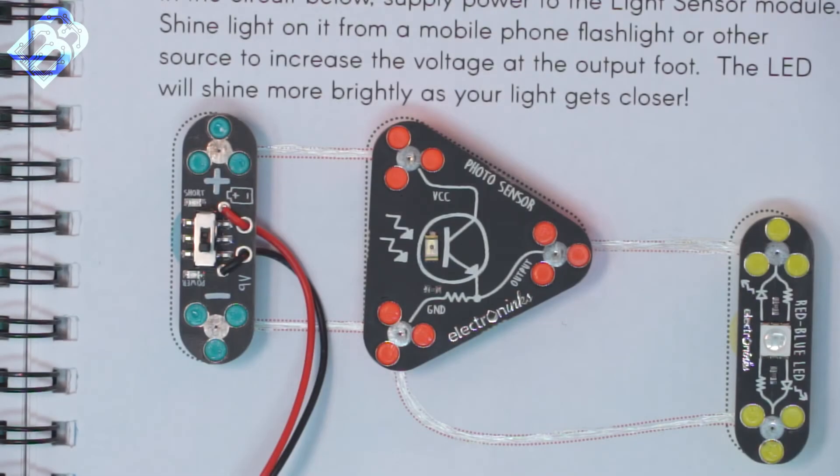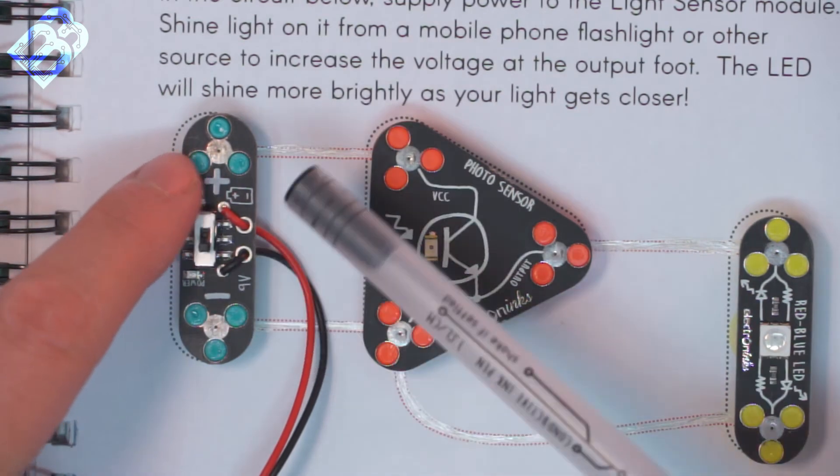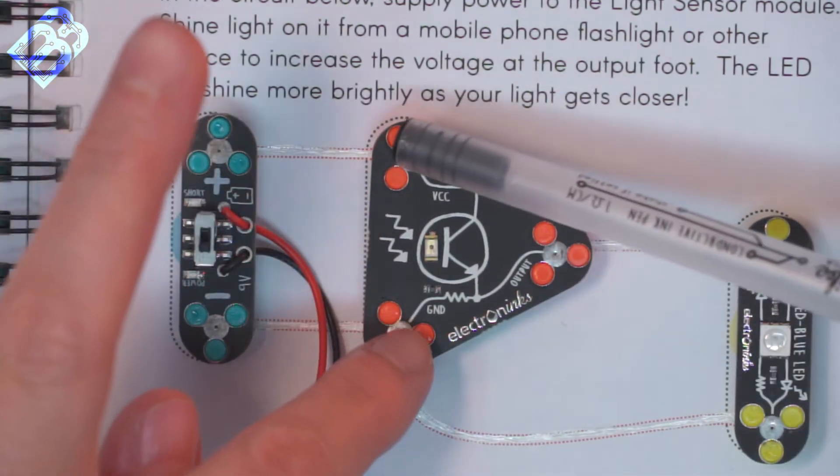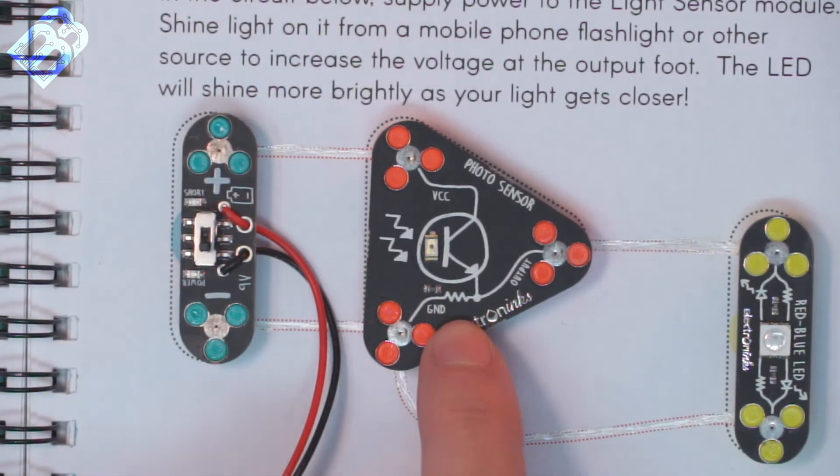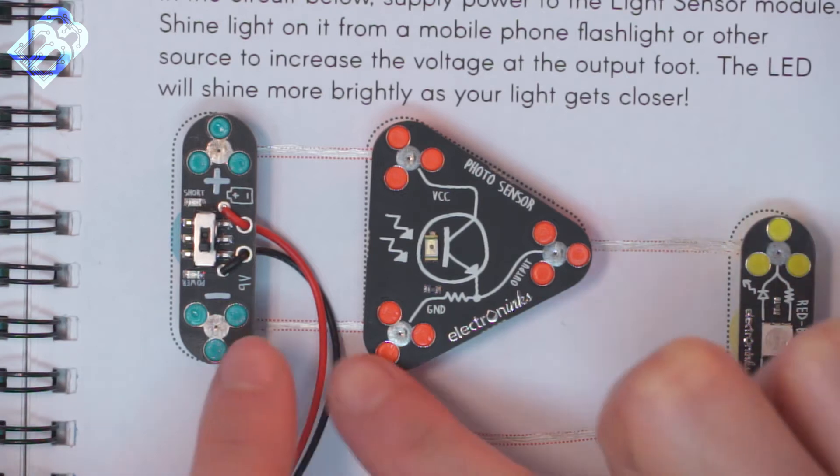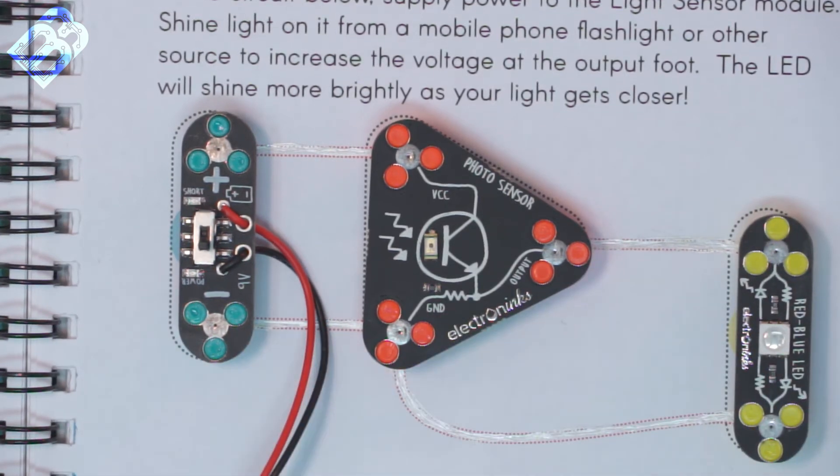With our circuit sketched and populated, let's analyze the current flow through the photo sensor. In any circuit, current follows the path of least resistance, much like water does in a stream. When our battery is turned on here, our current is going to flow from the positive side and into our photo sensor. Then it's going to follow this path to our node. Following the path of least resistance means it's going to take the route through the LED instead of the route through that resistor. Let's see what that looks like in action.